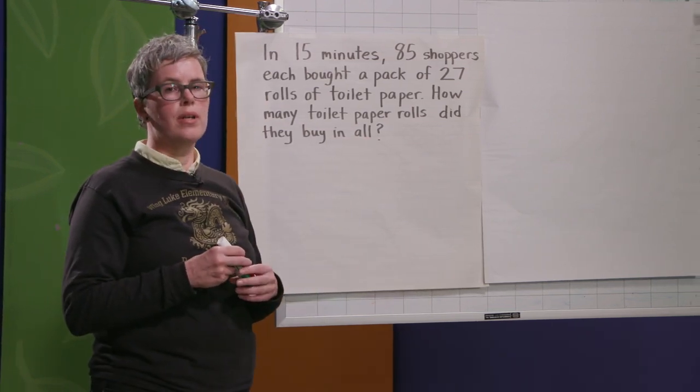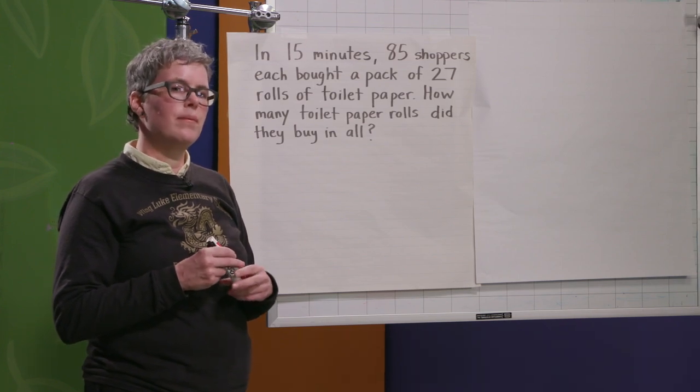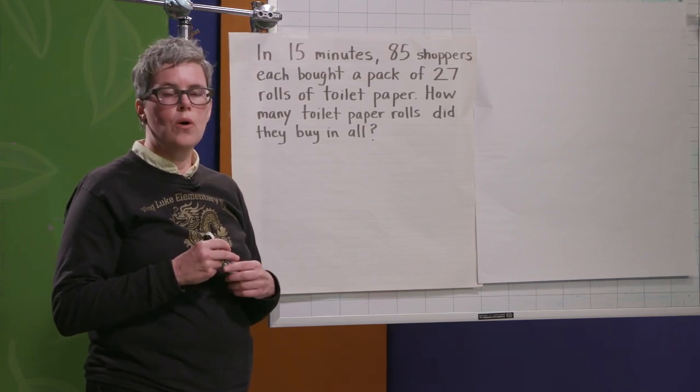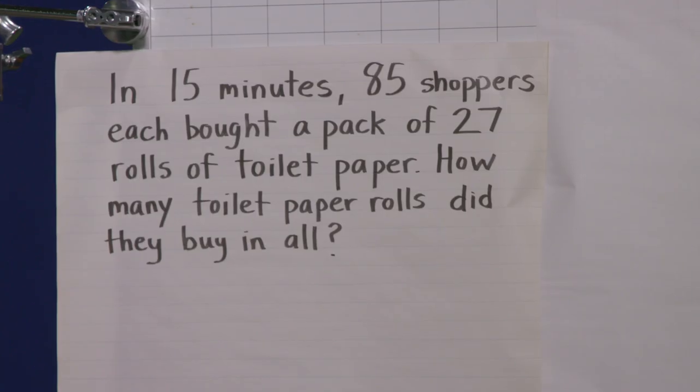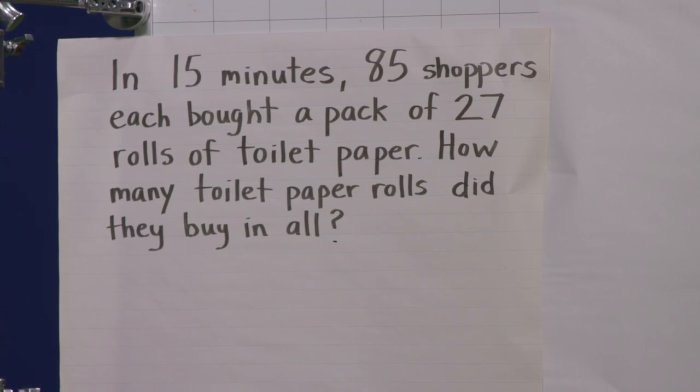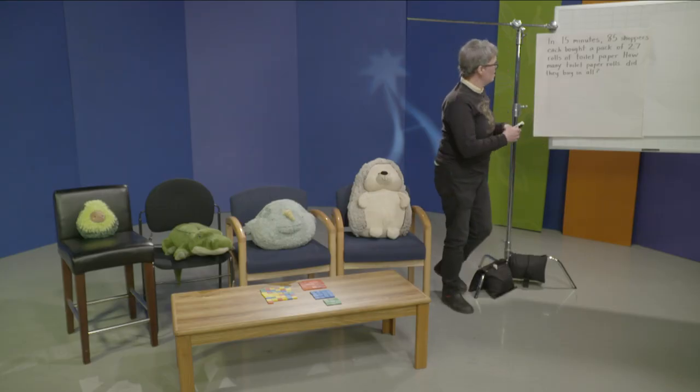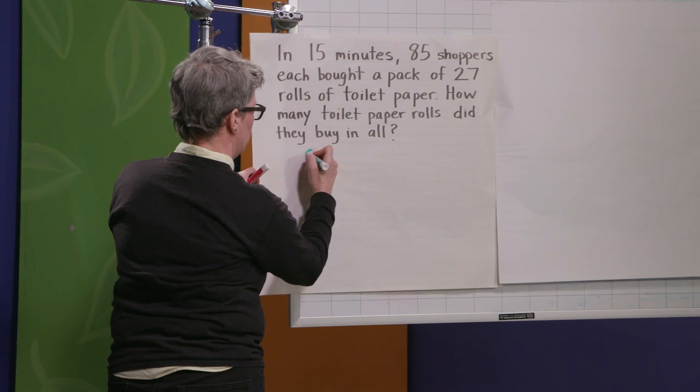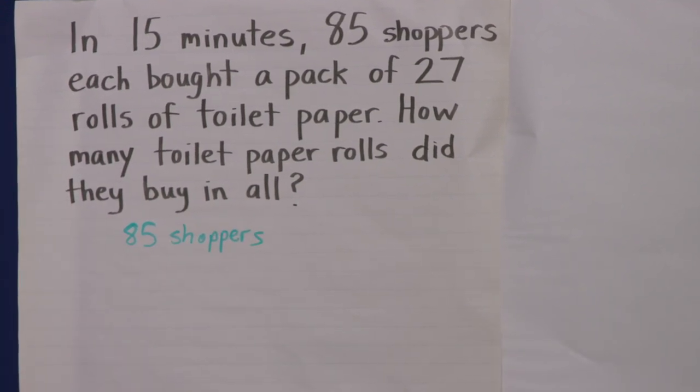Okay, third read. Third read is when we figure out what the important information is. Okay, so this time I'm going to have you read out loud and read with me. Okay, and I want you to figure out as we read what information is important. If you have a paper and pencil close by, you can write it down or you can just listen and hold the information in your mind. In 15 minutes, 85 shoppers each bought a pack of 27 rolls of toilet paper. How many toilet paper rolls did they buy in all? Okay. Oh, Sahara. Sahara says it's really important that we know that there are 85 shoppers. That's important information. Because they're each going to buy toilet paper, so we need to know how many of them there are.